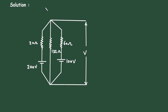Let's say this is node 1, and let's say this is current I1, this is current I2, and this is current I3 according to the polarity of voltages. Let's say this is a reference node with zero voltage, and all the currents flow from the positive polarity towards this reference node.